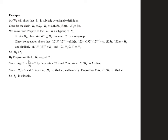So let's do an example. In the notes, we've got this example that says S3 is a solvable group. Remember that S3 is the set of permutations of three things. So we've got the identity, and we've got our transpositions that permute two things.